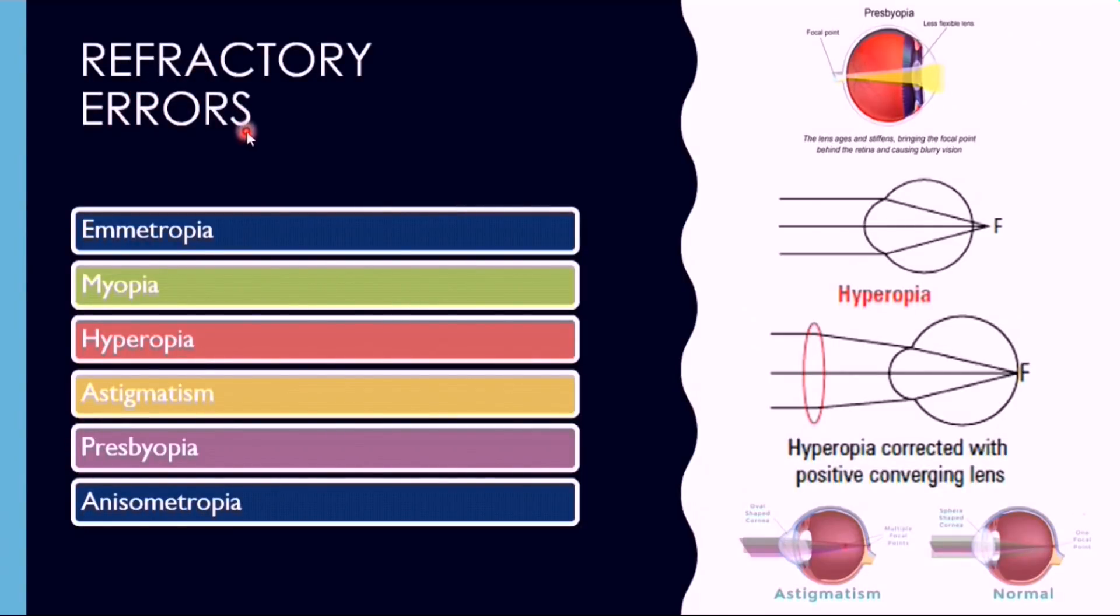The refractory errors: different kinds of refractory errors of eye are listed here. Out of all these refractory errors, hyperopia and presbyopia are treated by using convex lenses.